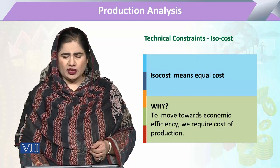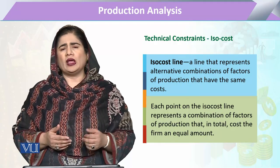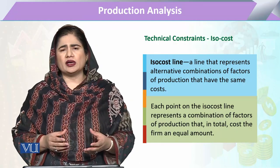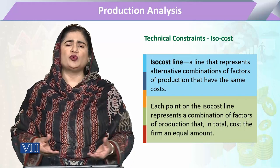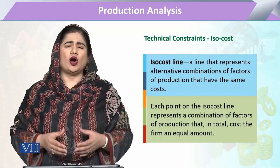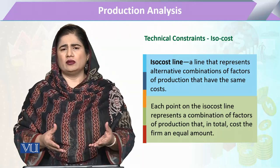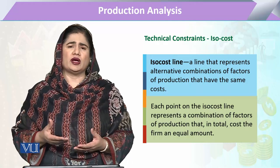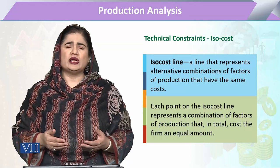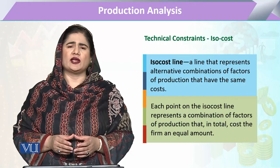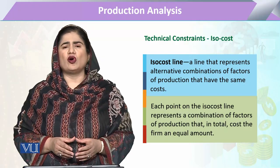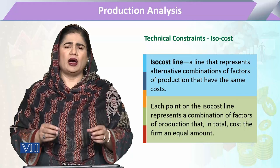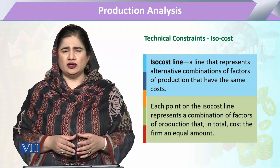ہمیں ISO cost کی ضرورت کیوں آتی ہے؟ ہم نے previously مقرر کردہ input کی وجہ سے maximum یا optimal output کا تعین کیا تھا — وہ technical efficiency کہلاتی ہے۔ لیکن جب ہم اسی مقرر کردہ input اور output کو prices کی شکل میں لے کر جائیں گے تو وہ economic efficiency کہلائے گی۔ ISO cost اور cost کی terms economic efficiency کے لئے ضروری ہیں۔